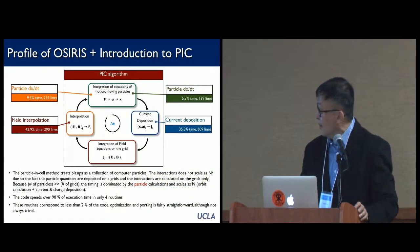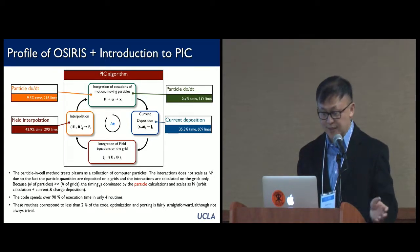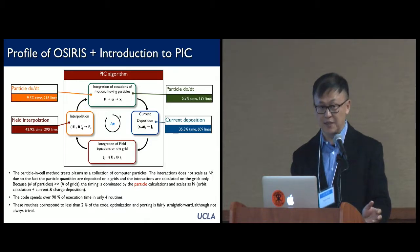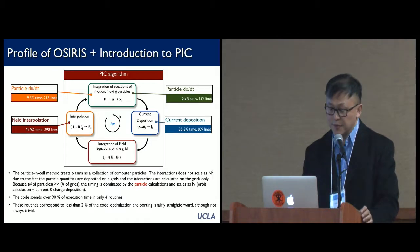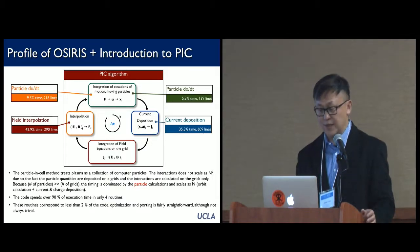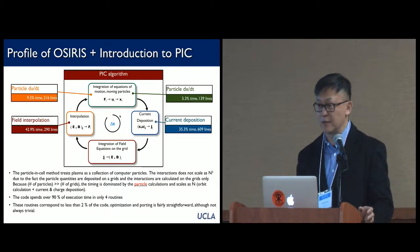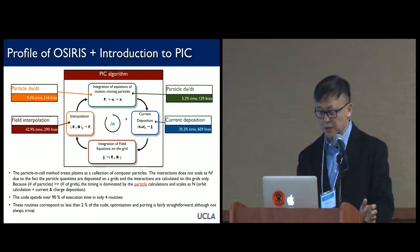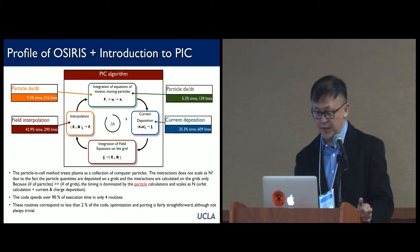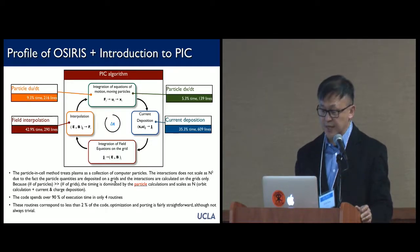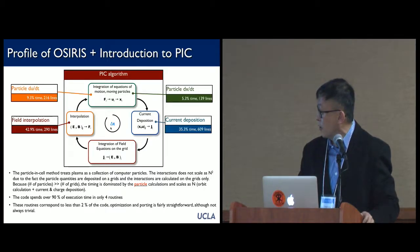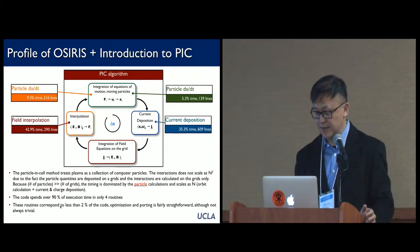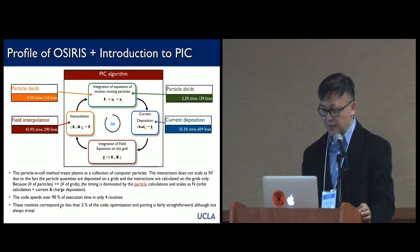The particle-in-cell algorithm solves very fundamental laws of physics, such as Newton's equations and Maxwell's equations. It's ideally suited for systems which are highly nonlinear, such as the ones we'll be talking about today. Particle-in-cell simulations have been around for about 50 years, so these codes are very large and very mature — hundreds of thousands of lines long. But really, 90% of the execution time is spent in four subroutines that account for about 2% of the code. So optimization and porting of particle-in-cell methods is fairly straightforward, but not always trivial.